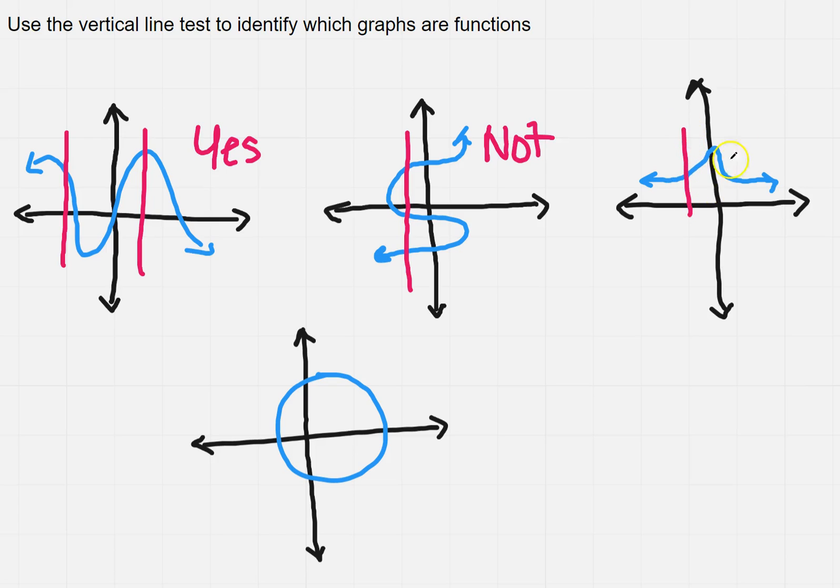Now this one over here on the right, same thing again, it only goes through one point so yes it is a function. And as you notice on a circle, same thing, it crosses more than one point so this is not a function.